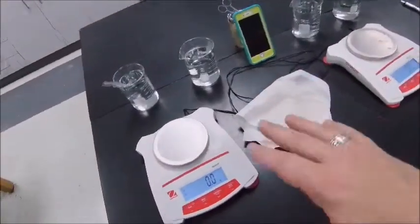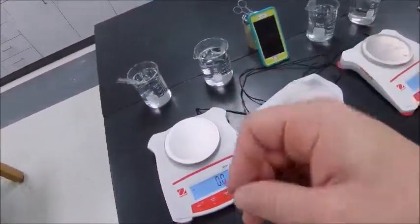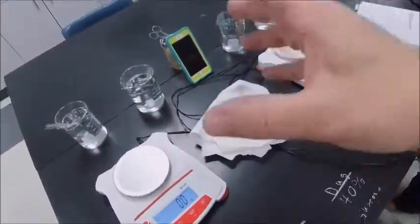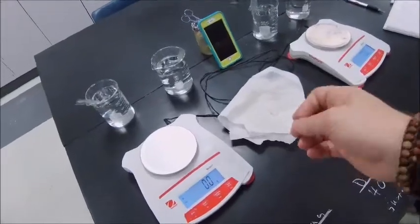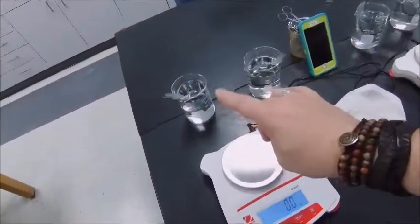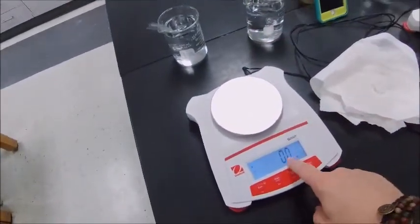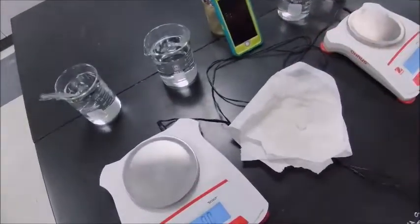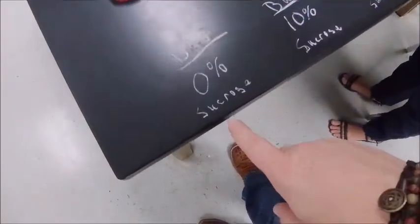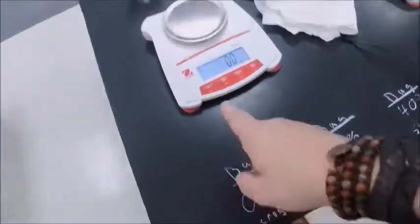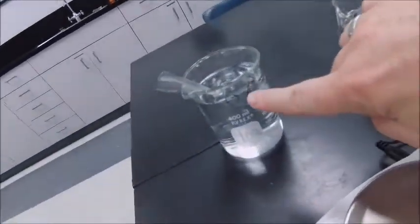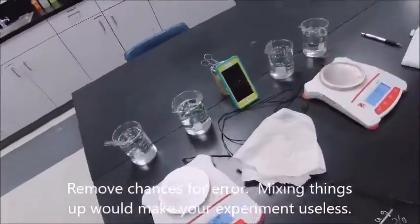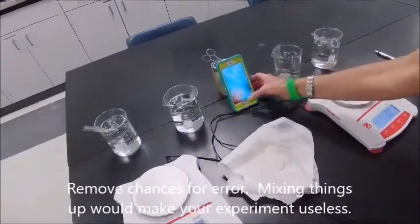We're demonstrating the weighing procedure. As we take the bags out, we dab them a very specific and consistent number of times to remove as much water from the outside as possible. Then we verify the scale is tared at zero grams, weigh the bag, and place it immediately back in the water to keep up with our timing. Everything is carefully labeled — both on the table and on the glassware — and we're keeping track of weights in the lab manual.